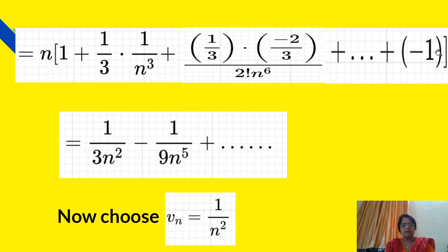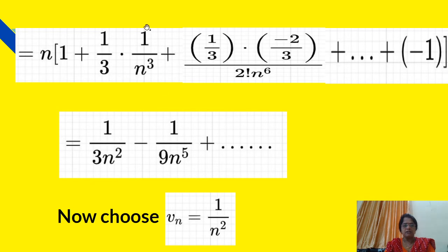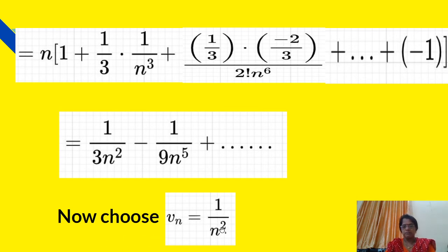When we multiply n inside, the n and −1 cancel, leaving the terms: 1/(3n²) − 1/(9n⁵) + ... after multiplying by n. Now we will choose vn = 1/n².